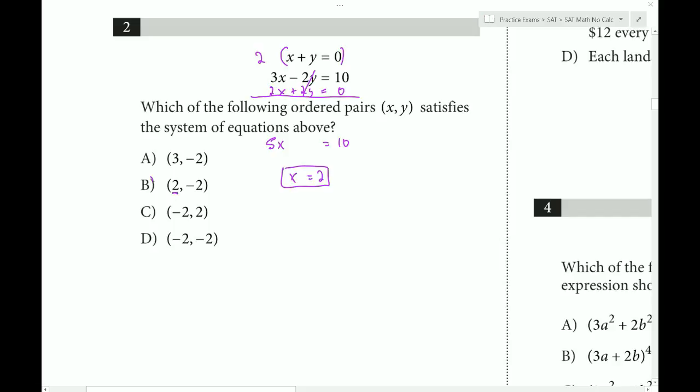The only choice with x equals 2 is choice B. If there was another choice, we'd have to plug in to find y, which would be negative 2.